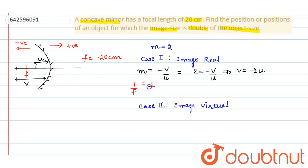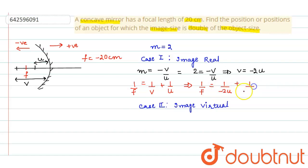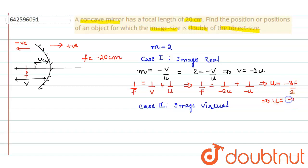Applying the mirror formula: 1/f = 1/v + 1/u. Substituting the values, we get 1/f = 1/(−2u) + 1/(−u). Solving this, u = −3f/2. Substituting f = −20 centimeters, we get u = −30 centimeters. That is, the object is placed 30 centimeters from the mirror.